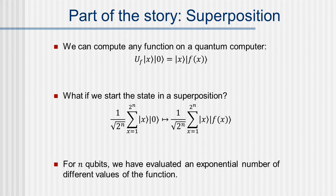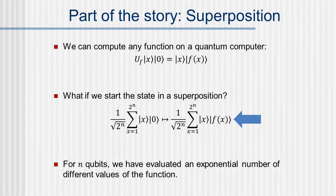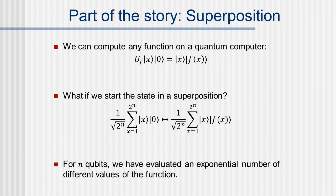Now we start to see the power of quantum computing, because we don't have to start in a single computational basis state x — we can start in a superposition over all bit strings. Then when we evaluate the function, we actually evaluate it at all possible values of x simultaneously. If there are n qubits, the number of function evaluations goes like 2 to the power of n — an exponential growth. With just 64 qubits the number of function evaluations would be around a million times the storage of the world's largest supercomputer.